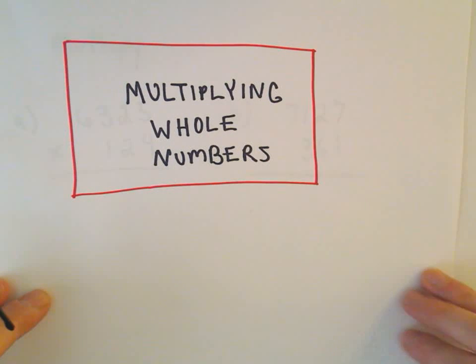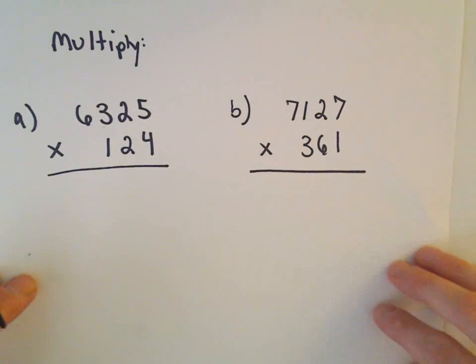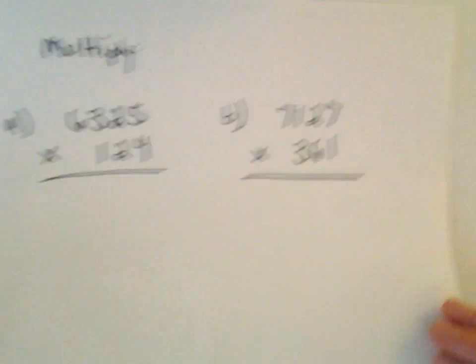All right, so one last example here of multiplying whole numbers. Part A, we did 6,325 times 124.